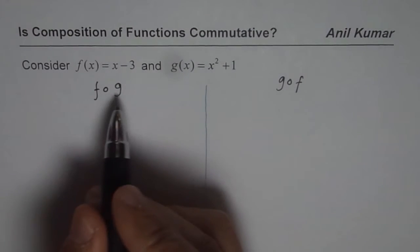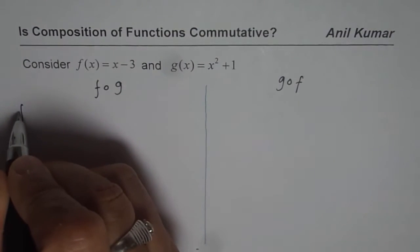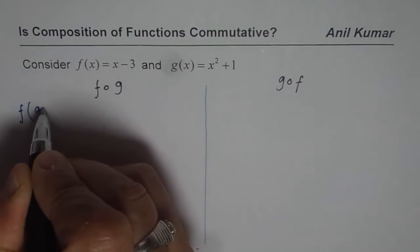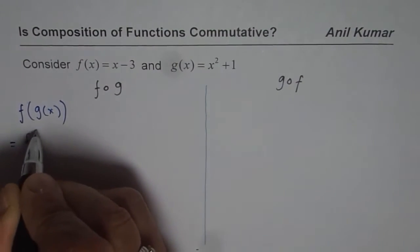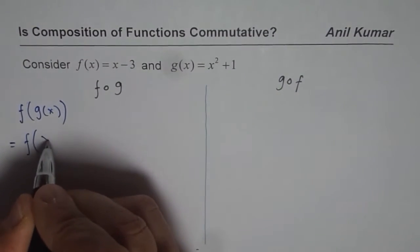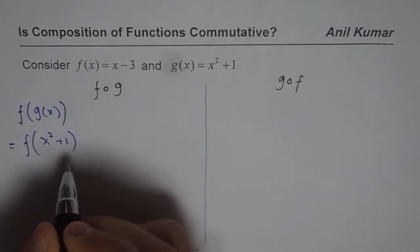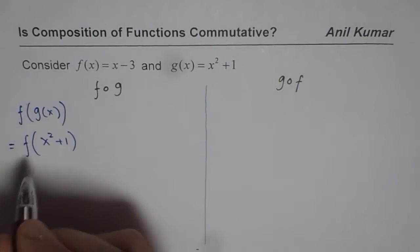So f of g could be written as f(g(x)), which is equal to f of, in our case g(x) is x squared plus 1 and f(x) is x minus 3.